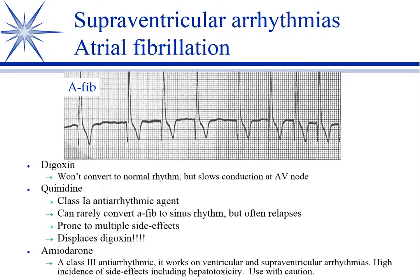That's where digoxin plays a role. One of the things digoxin does is slow conduction at the AV node — it doesn't stop the atrial fib, but it keeps the AV node from conducting as many impulses, thereby slowing heart rate. So you'll see many animals with atrial fib where we don't try to convert them because of underlying myocardial injury; instead, we put them on digoxin, and sometimes add diltiazem or a beta blocker if digoxin is not enough.